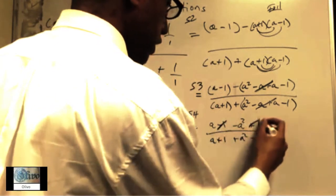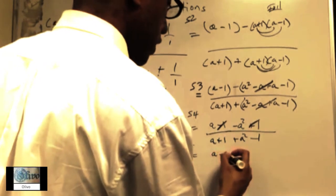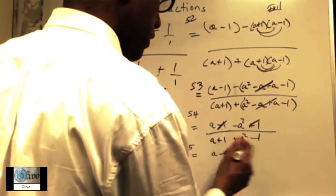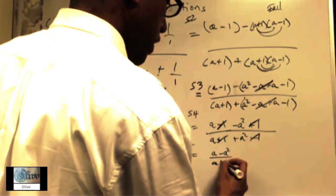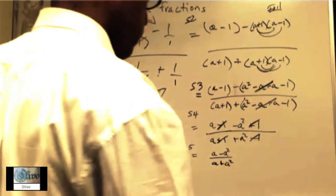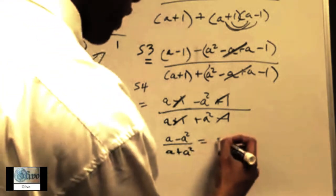So you get a minus 2. You can tell that these cancel out, leaving you with just a², and these cancel out, leaving you with just a and another square.